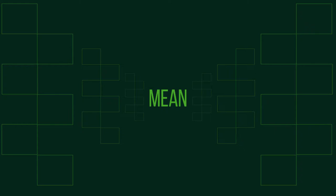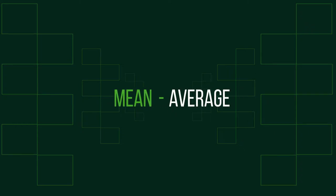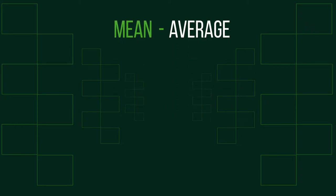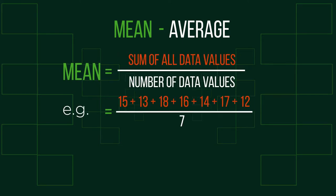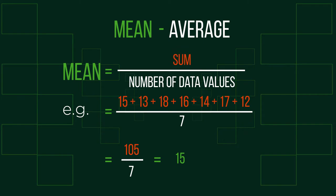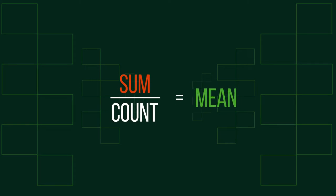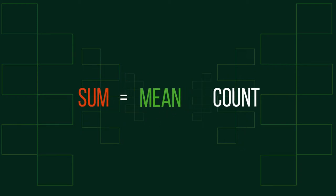Mean, alongside mode and median, is a form of average and is found by dividing the sum total of values by the number of values themselves. This is sometimes referred to as sum over count. The application of this process — division — can be reversed to help us find an original value given the mean. The reverse process to division is of course multiplication.